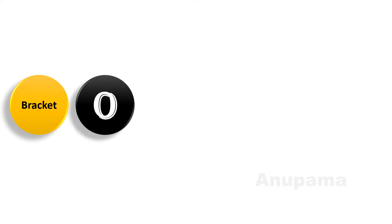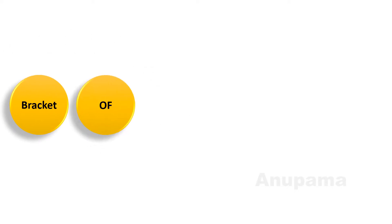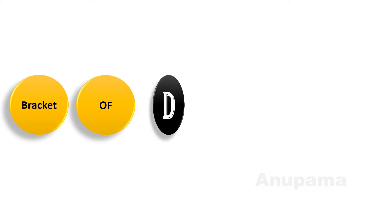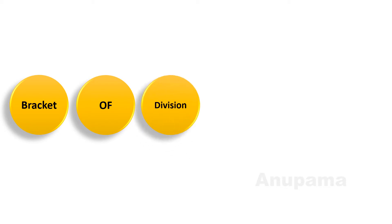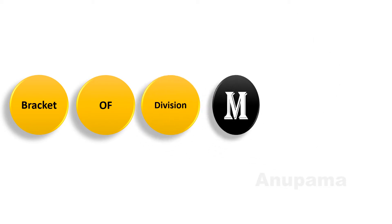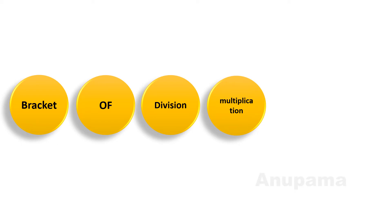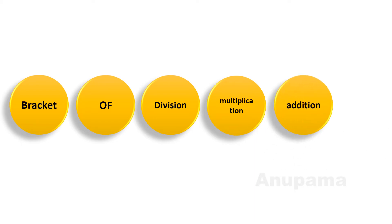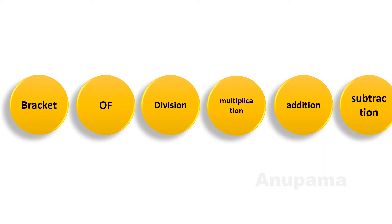In BODMAS, B stands for bracket, O stands for off, D stands for division, M stands for multiplication, A stands for addition, and S stands for subtraction. So it is BODMAS and its sequence.